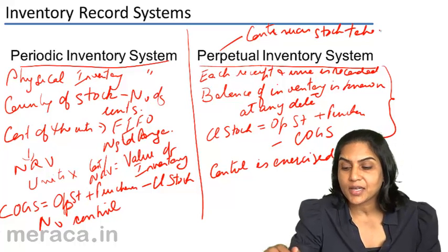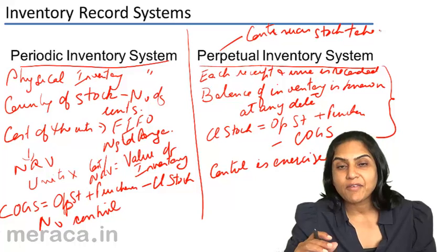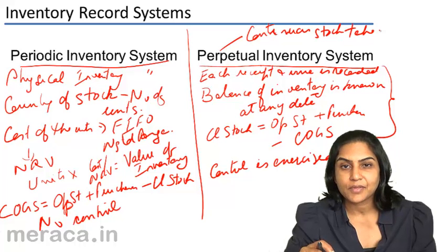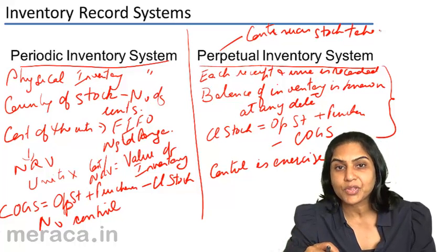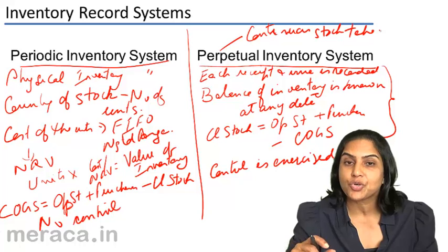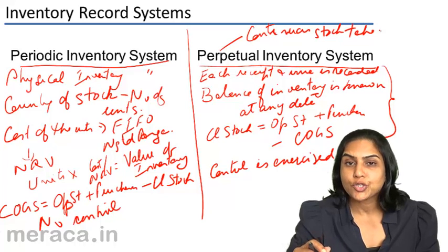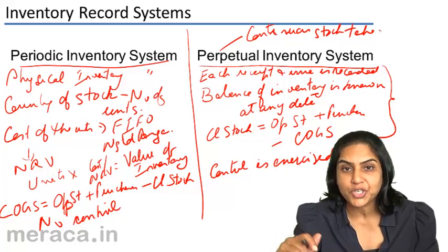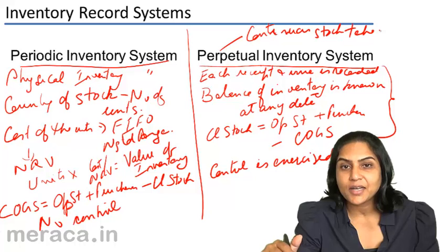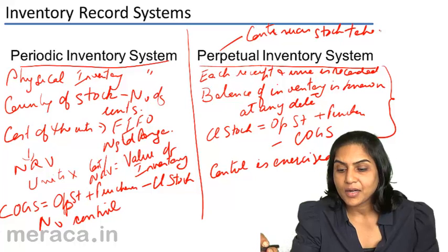Continuous stock take is a method by which there is stock taking throughout the year. If there are some 500 items of inventory, a couple of items are checked every day — physically counted and checked with the store's ledger records. This way, the storekeeper is not sure which two items are going to be checked on a particular day. Also, the business operations don't have to be shut down to take a complete stock take; the process of stock taking a few items at a time takes place throughout the year.